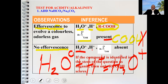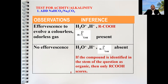The hydroxonium ion forms when an acid dissolves in water: the acid releases hydrogen ions, which combine with water (H₂O + H⁺ → H₃O⁺, charge = +1). So hydroxonium simply indicates the presence of acid. If the compound is identified as organic in the question stem, only RCOOH (carboxyl group) will score — not just hydrogen ion alone.